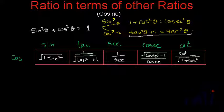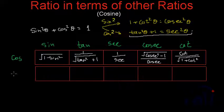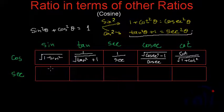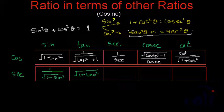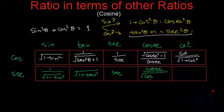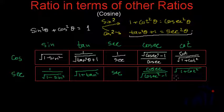Since sec theta is the inverse of cos theta, we can write the values of sec in terms of other ratios as well. In terms of sine, sec equals 1 by square root of 1 minus sine squared. In terms of tan, sec equals square root of 1 plus tan squared, which comes directly from the identity. In terms of cosec, it is the inverse of the cosec expression, giving cosec divided by square root of cosec squared minus 1. In terms of cot, it is square root of 1 plus cot squared divided by cot.